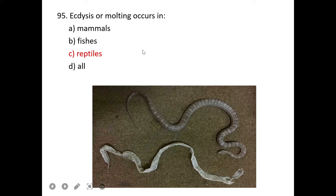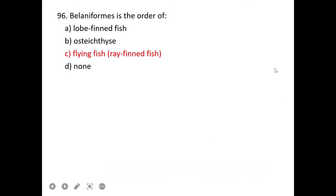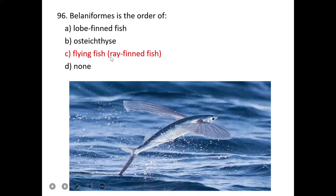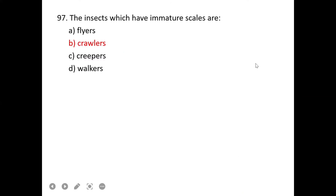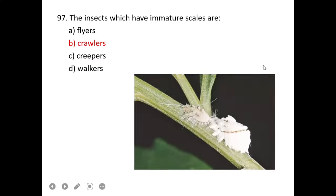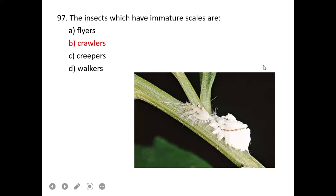Those insects which have immature scales are called crawlers. 3D shape of protein is maintained due to interaction of polypeptide chains. Polypeptide chain interactions maintain the 3D structure of proteins.